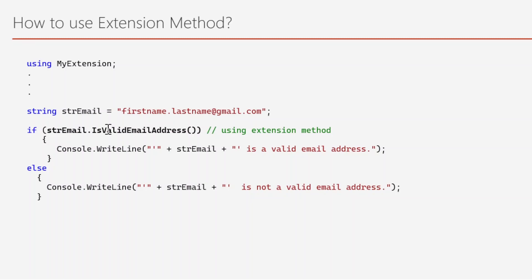Based on the result, if the value returned is true then one statement will get executed; if we receive a false value then a different statement will get printed on the console. We have seen how to create and use an extension method — now we will see these things in action in Visual Studio.